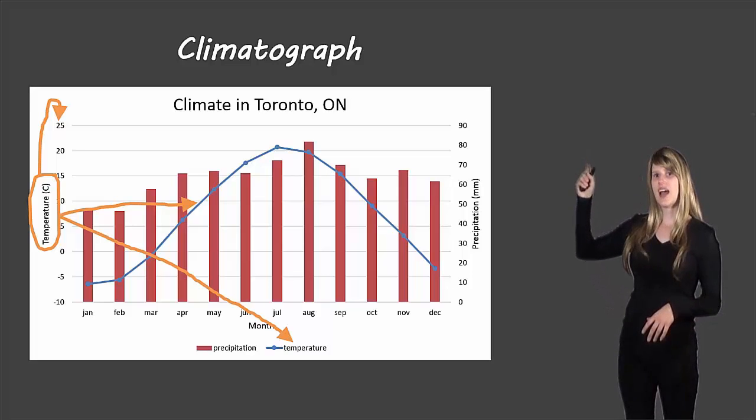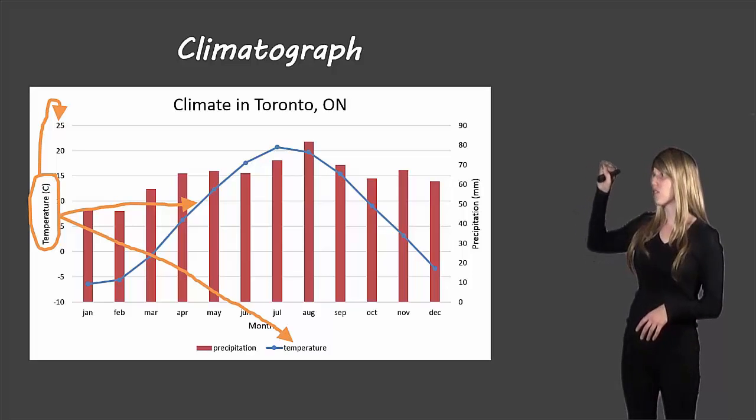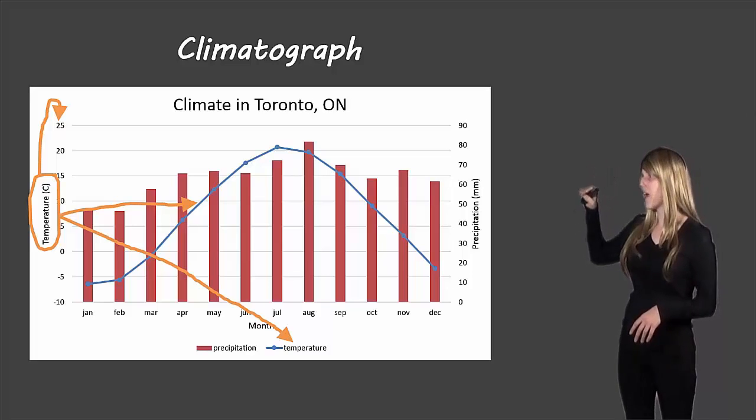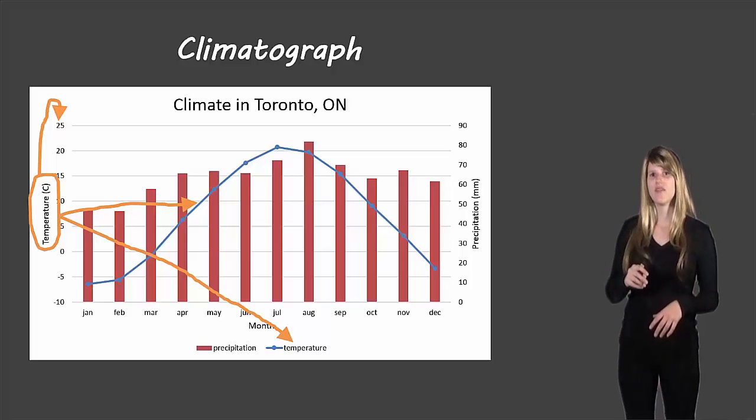You can see that it has the numbers written there. It goes from minus 10 all the way up to 25. We need to have those numbers to know what the intervals are on that graph.